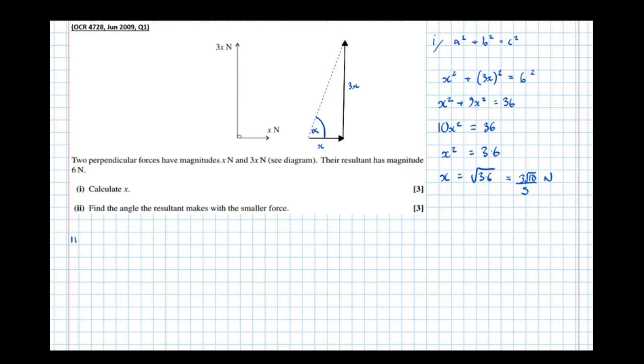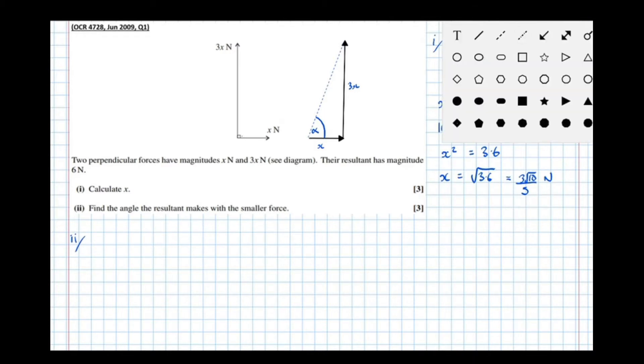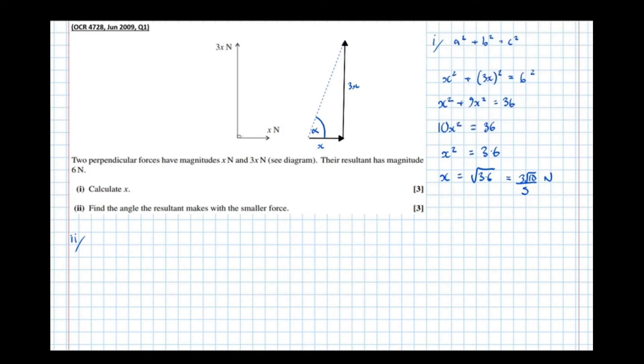Right, so part two. So drawing the triangle a bit better now, we'll redraw this triangle, because now we know the lengths of the sides. So we've got that there. Not a particularly great triangle, but it doesn't need to be. So x is 3 root 10 over 5. And 3x will be 9 root 10 over 5.